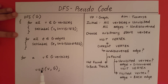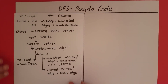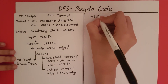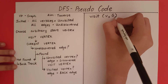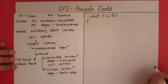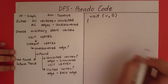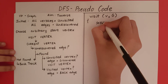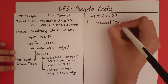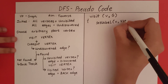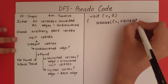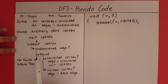Now let's write the visit function. The function visit takes in a vertex V and a graph G. First, we are visiting the vertex, so we set the label of that vertex to visited. After that we need to search for undiscovered edges, so we go through all the incident edges to V and check each one whether it is undiscovered.